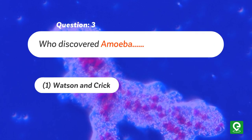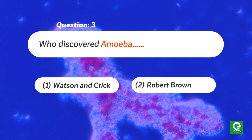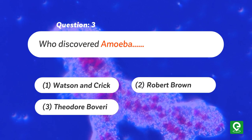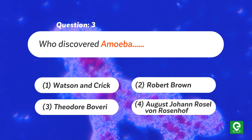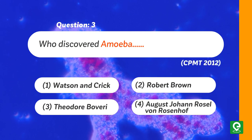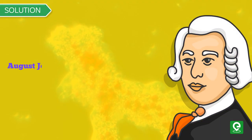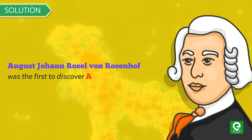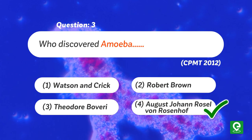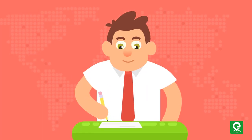Question 3: Who discovered amoeba? Options: 1) Watson and Crick, 2) Robert Brown, 3) Theodore Boveri, or 4) August Johann Rosel von Rosenhoff. This question was asked in CPMT 2012. Solution: August Johann Rosel von Rosenhoff was the first to discover amoeba in 1757. Hence option 4 is correct.